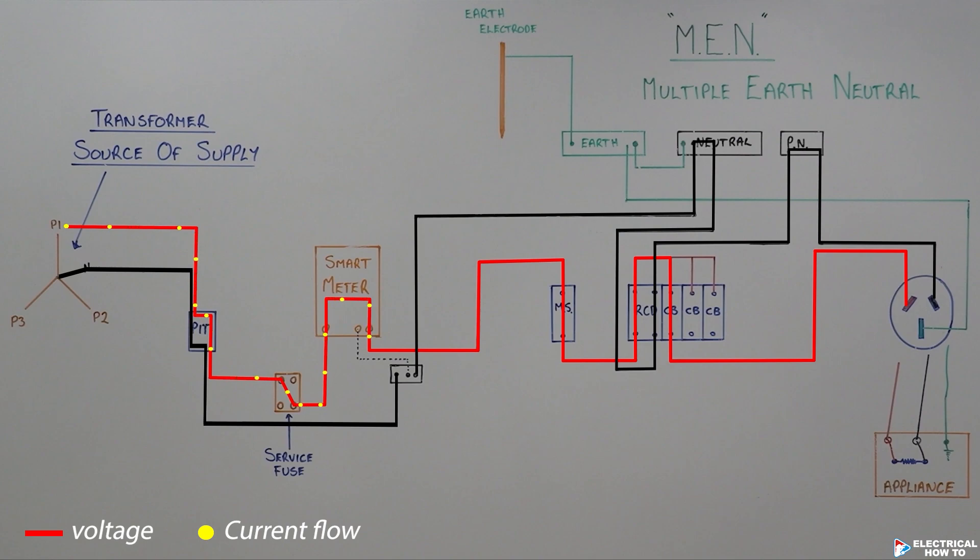Up through our smart meter, so we know exactly how much power is being drawn. It will move along through our main switch, which is our overload protection. Then it will come up through our RCD, down through our circuit breakers, which is our overload protection of our cable, and then we'll move along out into the field to our power point.